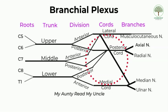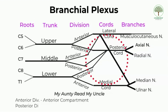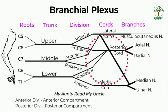The mnemonic stands for: musculocutaneous nerve, axillary nerve, radial nerve, median nerve, and ulnar nerve. A key feature of the upper limb nerve supply is that the anterior divisions supply muscles in the anterior compartment and dermatomes on the ventral surface, while branches from the posterior divisions supply the posterior compartment muscles and dermatomes on the dorsal surface. Note that nerve roots C5 and C6 supply the upper arm, and C8 and T1 supply the digits.